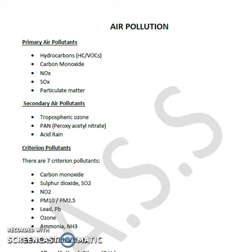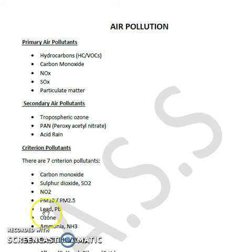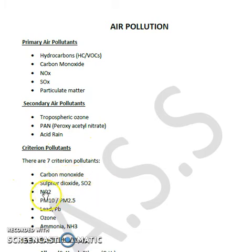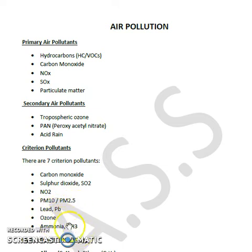Now we will be discussing the details of criteria pollutants. There are six criteria pollutants: CO (carbon monoxide), SO2, NO2, PM10 or PM2.5, lead, and ozone. These are also called criteria air pollutants.